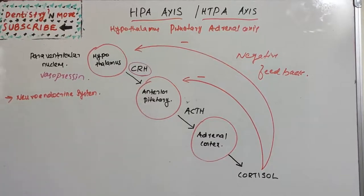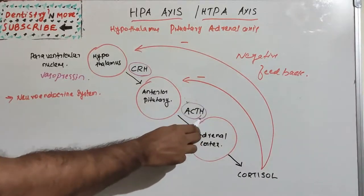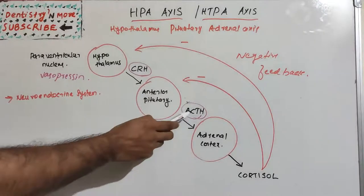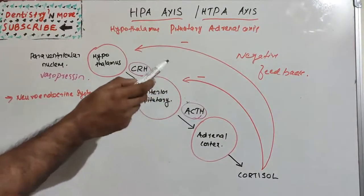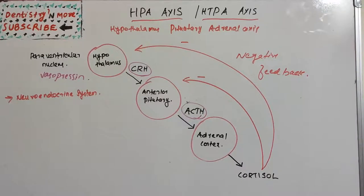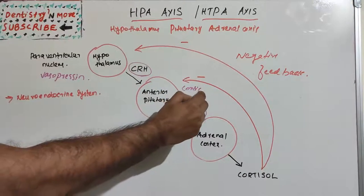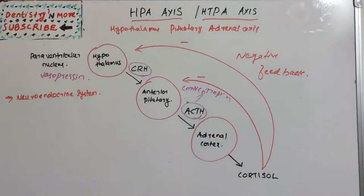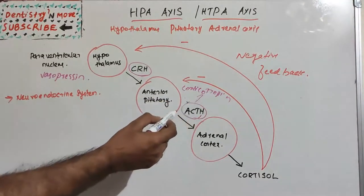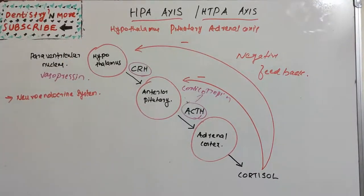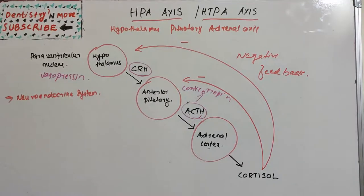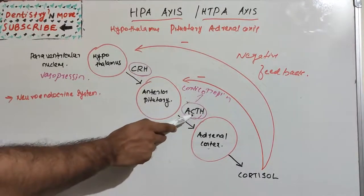These two hormones, CRH and vasopressin, regulate the anterior lobe of the pituitary gland. In particular, they stimulate the secretion of adrenocorticotropic hormone (ACTH), also known as corticotropin. This ACTH in turn acts on the adrenal cortex — the glands present above the kidneys. So CRH acts on the pituitary to release ACTH, and ACTH acts on the adrenal cortex.